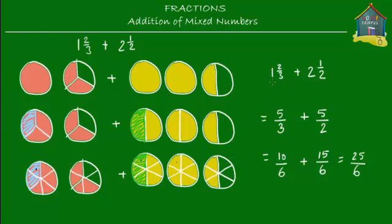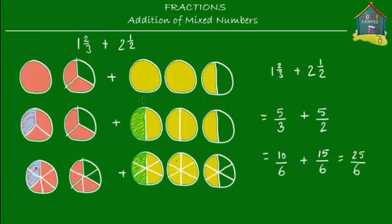So one and two-thirds plus two and a half gives twenty-five slices when each pizza is cut into six slices — that's 25/6. But we want the answer in mixed number format, since the original numbers were mixed numbers. To convert 25/6 to a mixed number, we need to find how many whole pizzas there are and how many leftover slices.